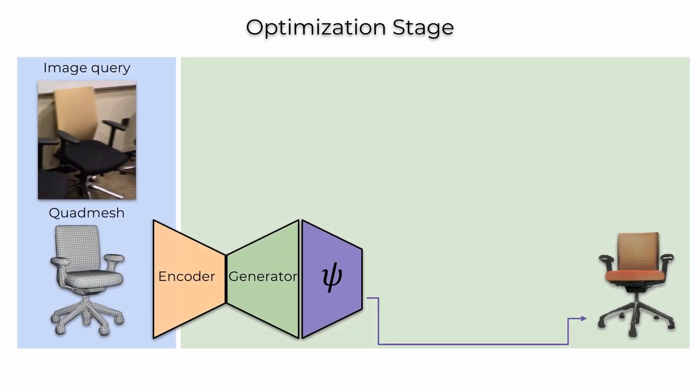We then leverage our texture manifold for object texturing from an image query. We optimize for the best texture latent, starting with a random latent code.